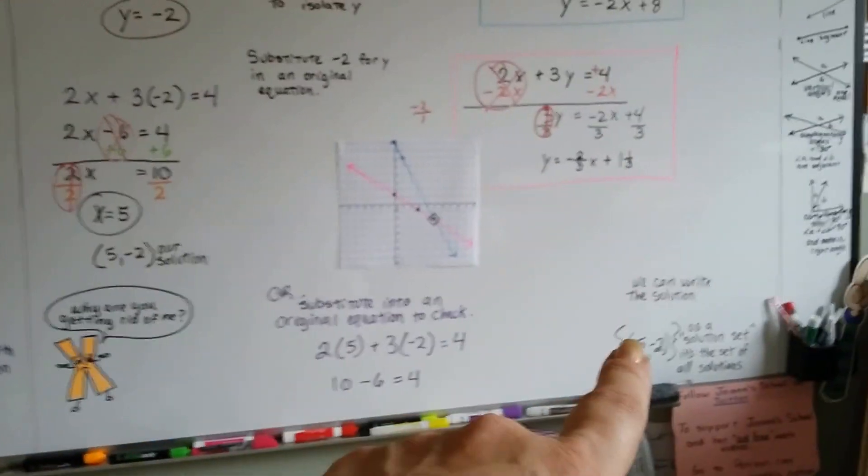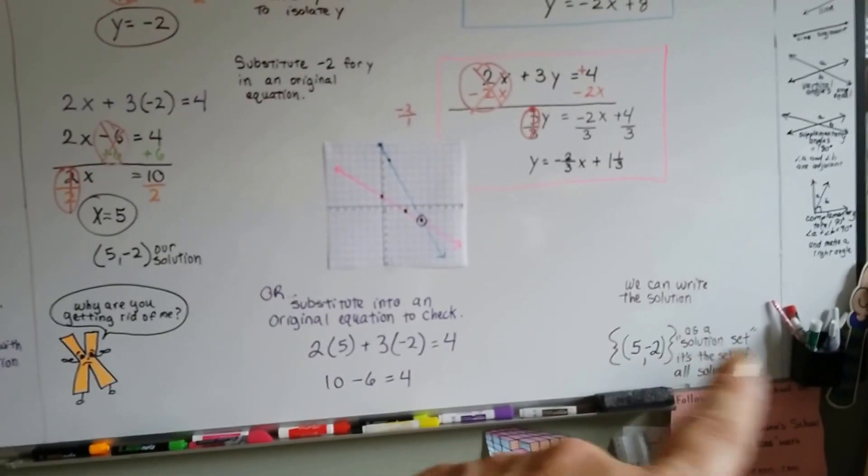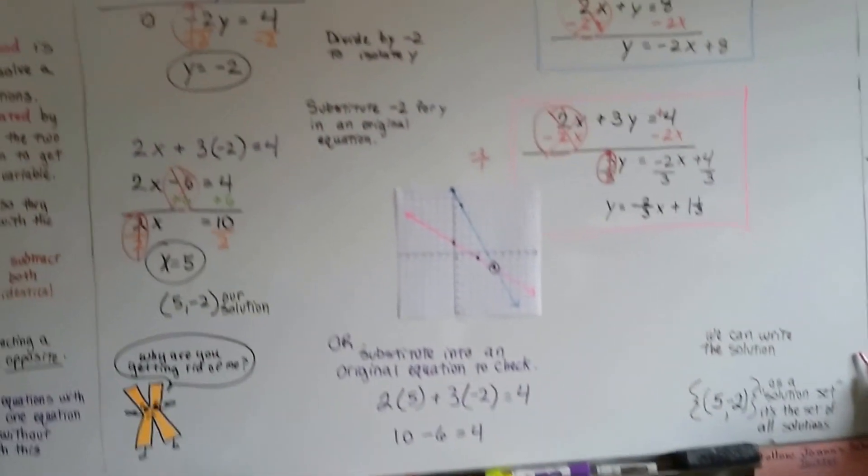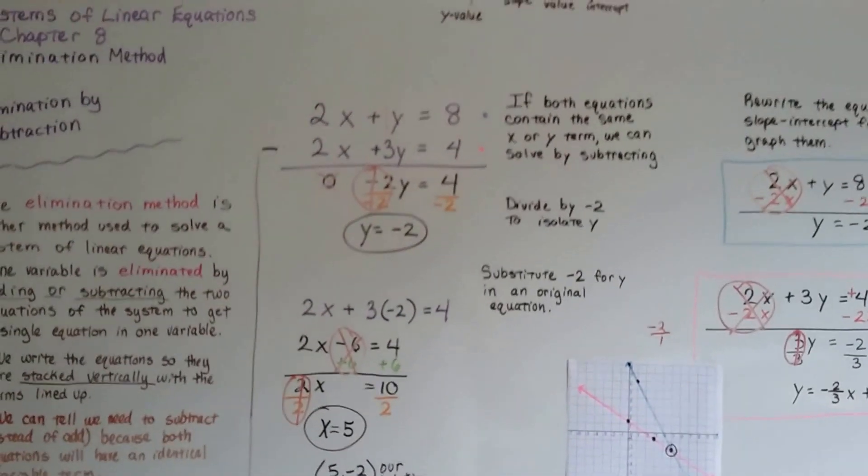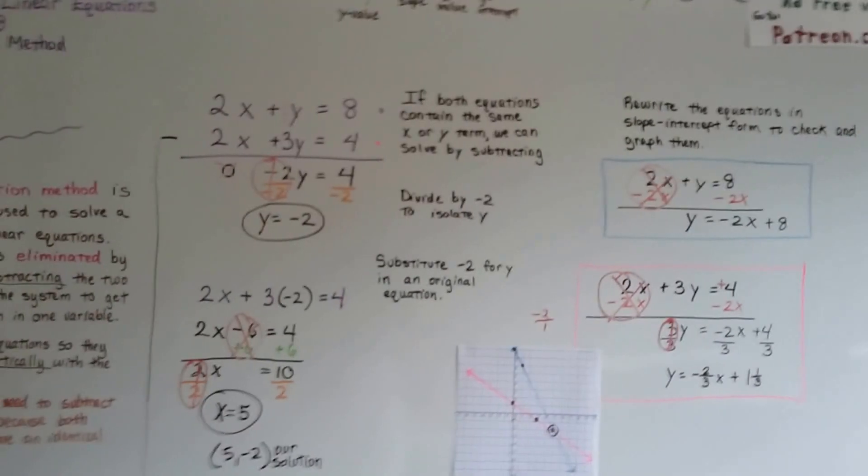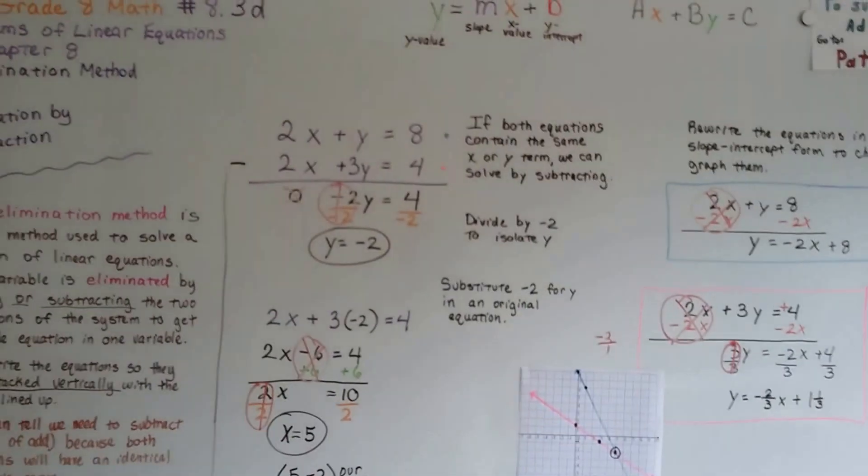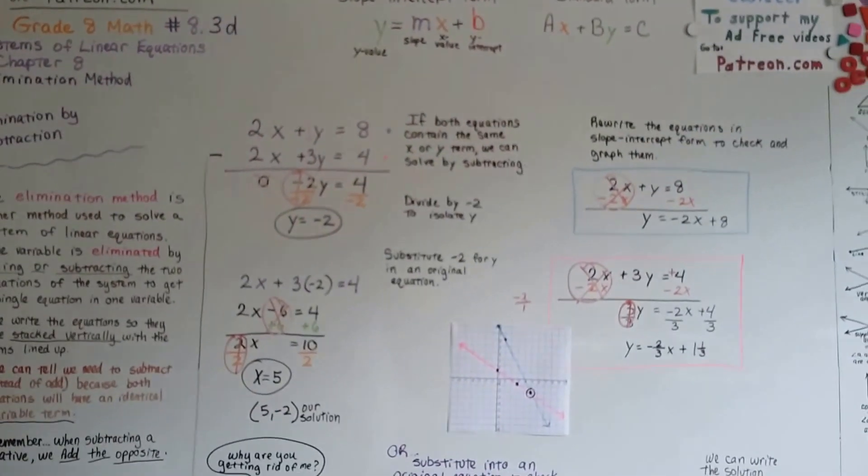So, the solution set is 5 comma 2. So we're going to continue on talking about systems of equations and we'll keep working on these problems. I'll see you in the next video. Bye!